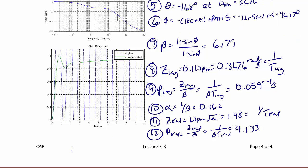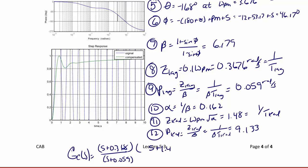Finally, Gc(s) equals (s + 0.368)/(s + 0.059) — that's the lag compensator — times (s + 1.48)/(s + 9.133) — that's the lead compensator.